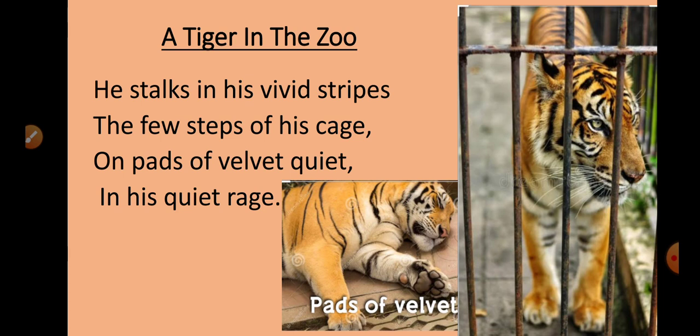There are five stanzas in the poem. Let's read the first stanza now: 'He stalks in his vivid stripes the few steps of his cage, on pads of velvet quiet, in his quiet rage.'